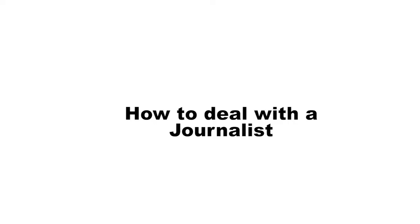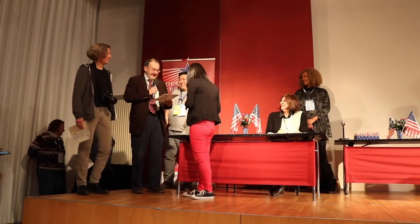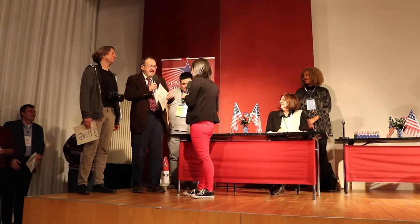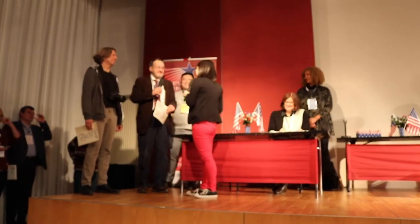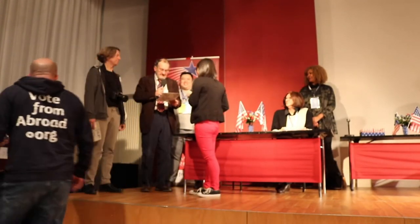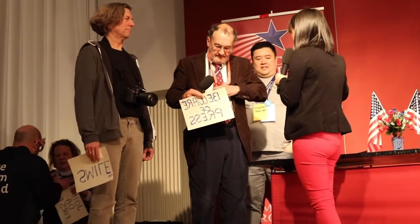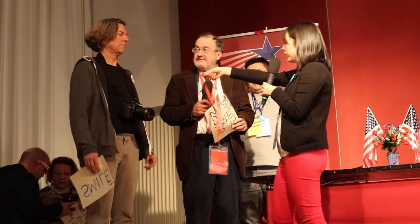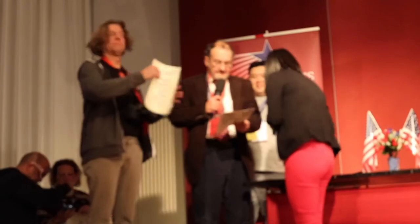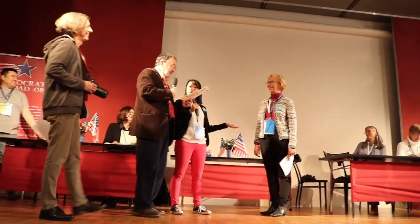Scene two looks at how to deal with a journalist. A CNN journalist sent by Wolf Blitzer arrives and questions why there would be a primary overseas. The poll worker welcomes him to the Munich Voting Center and asks that he and his colleague wear press credentials so that members and voters know they're from the press. The journalist is then introduced to the communications coordinator, Connie Communications.